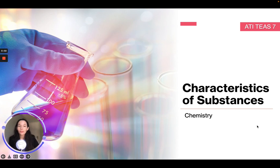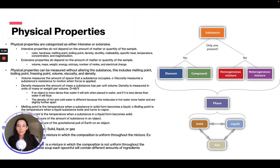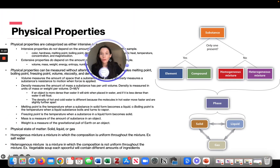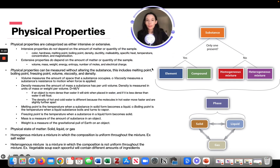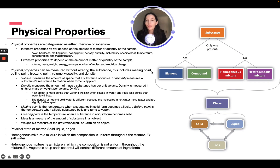In this module we're going to be talking about characteristics of substances. Physical properties are characterized as either intensive or extensive. Intensive properties do not depend on the amount of matter or quality of a sample — this could be color, hardness, melting point, boiling point, density.